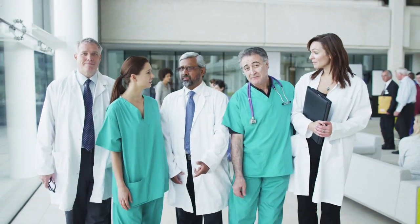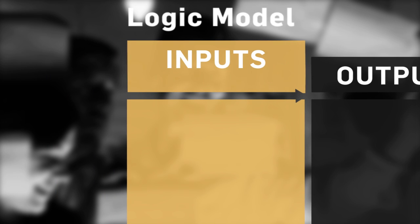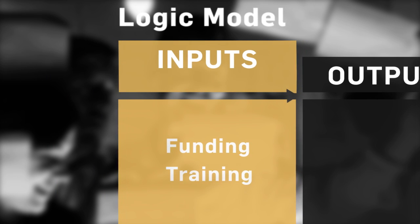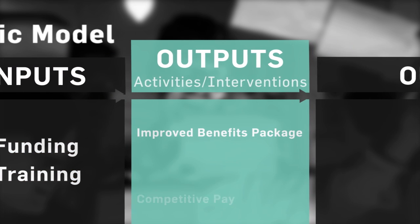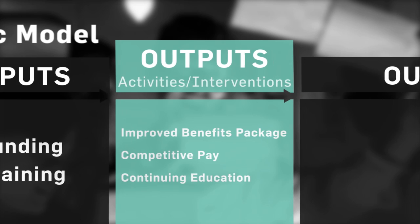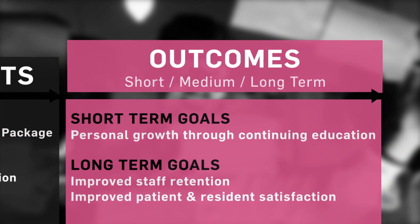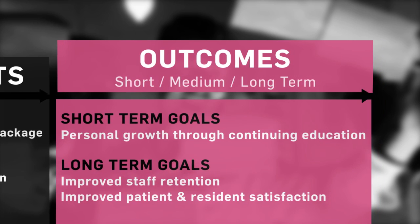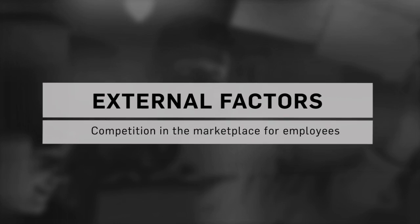Say your organization wants to improve staff retention — this is what your logic model might look like. Inputs are what we invest. Outputs are what we are doing. Outcomes are our goals. Assumptions are existing knowledge. And external factors are things that might matter, but we can't control.